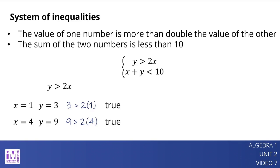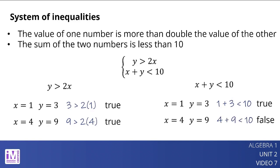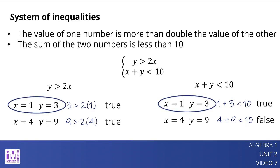The same can be said about the second constraint. One pair is x equals 1 and y equals 3, since 1 plus 3 is less than 10 is true. What about x equals 4 and y equals 9? 4 plus 9 is less than 10 is false, so it does not meet this constraint. The pair x equals 1 and y equals 3 meets both constraints, so it is a solution to the system. The pair x equals 4 and y equals 9 meets the first constraint but not the second, so it is not a solution to the system.